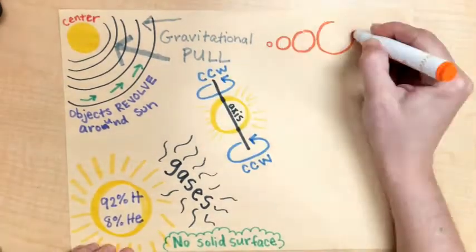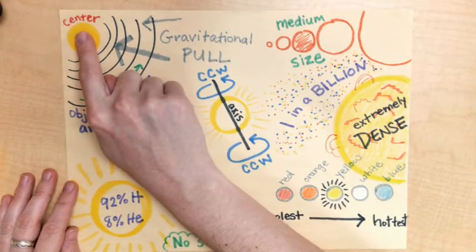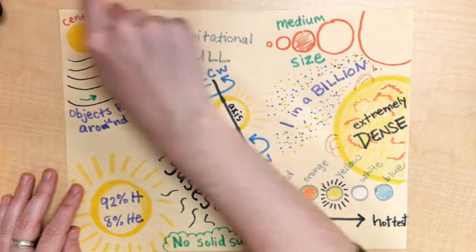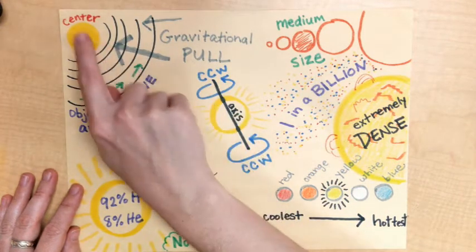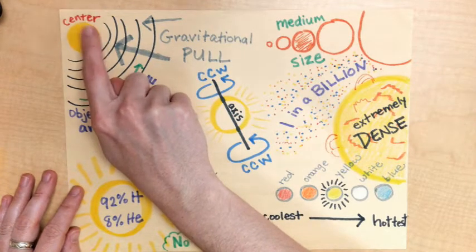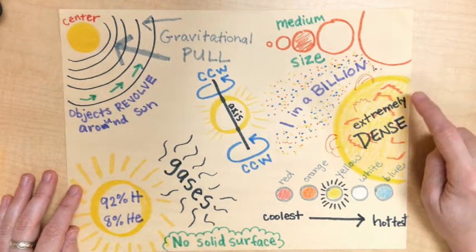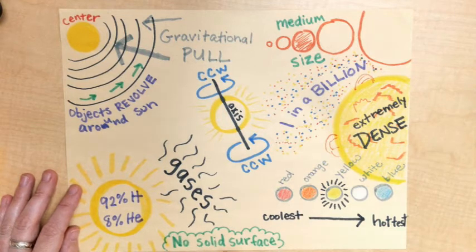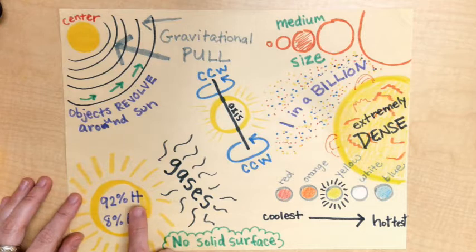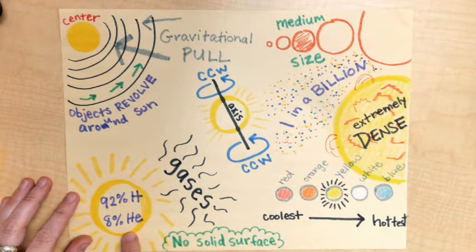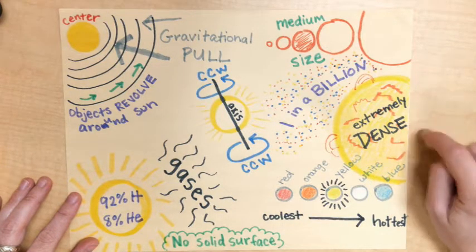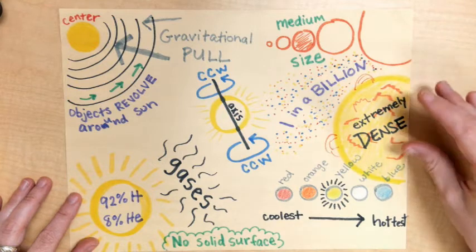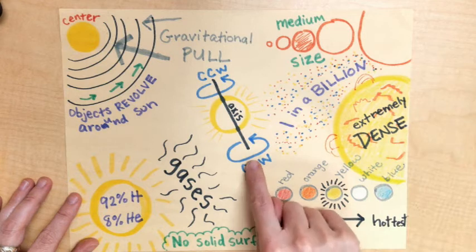The first thing I want to talk about is our Sun. It's in the center of our entire solar system, so all of the planets and asteroids revolve or orbit around our Sun. It is the largest object in our solar system, and because of its size it is extremely dense. Now it's not a solid — there's no solid surface. Instead it's made out of gases, mostly hydrogen and some helium. Because the Sun is so hot, there are a lot of solar flares that happen on that outer surface.